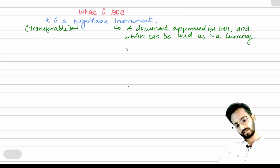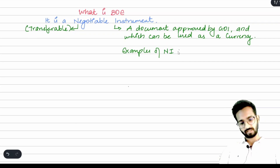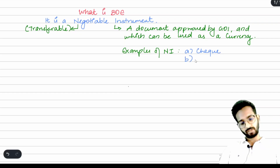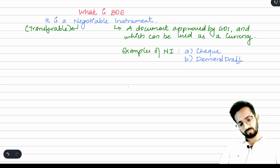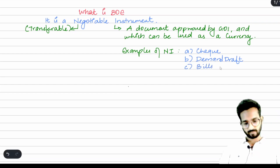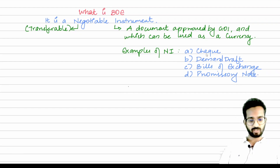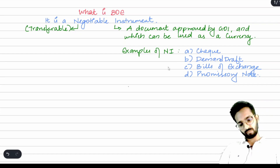A negotiable instrument is a document approved by the Government of India which can be used as currency. Examples of negotiable instruments include: A) cheque — because a cheque is also a negotiable instrument and can be transferred anywhere; B) demand draft — though this concept has become very old and with online payments its usage is very less; C) bills of exchange — which is what our chapter will talk about; and D) promissory note. Our focus will be on bills of exchange.